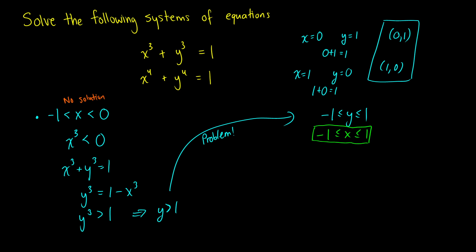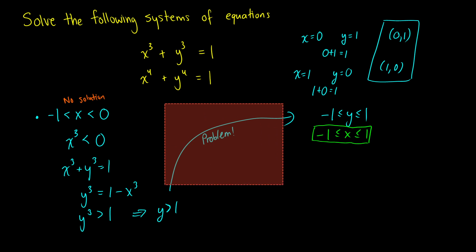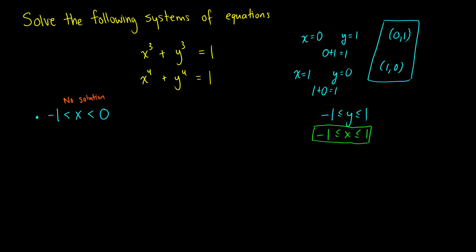So the only thing we have to consider now is what about the case where we have x between 0 and 1? Because if we cover this, then we've covered the whole range of solutions that could be there, given our x. So if x is between 0 and 1, what does this mean for x cubed? Well, we're squaring something, or we're cubing something that's a decimal. So this is going to force x cubed to be less than x.